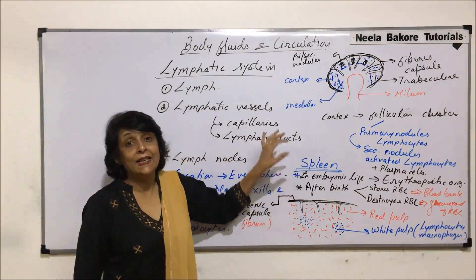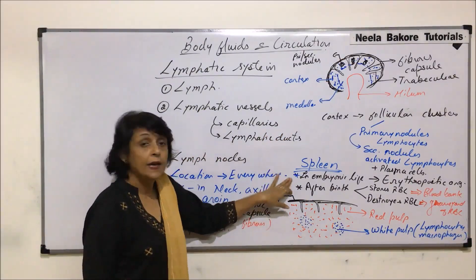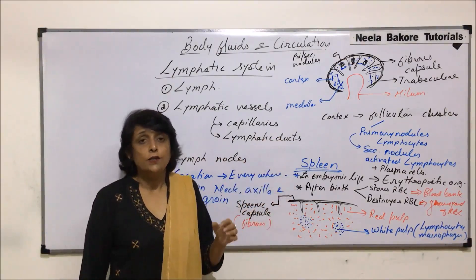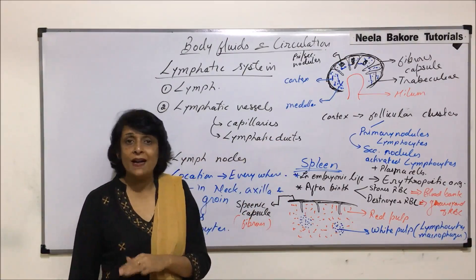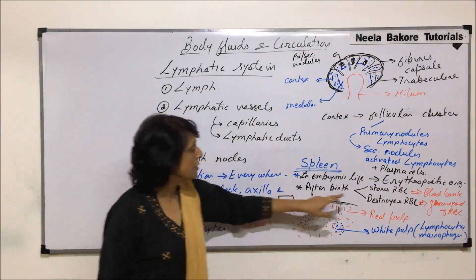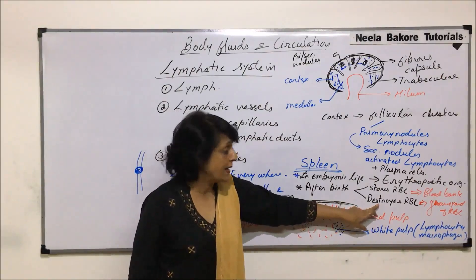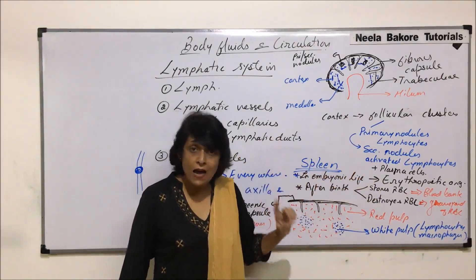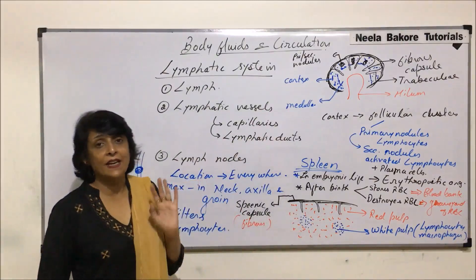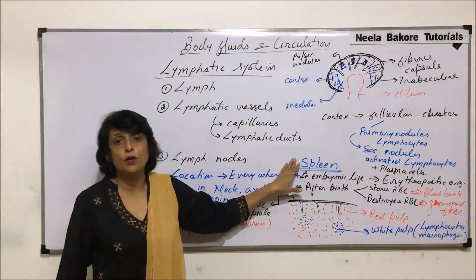The spleen is located above the stomach. In embryonic stage it acts as an erythropoietic organ. After birth, the function of erythropoiesis is taken over by the bone marrow. After birth it performs two functions: it stores RBCs — that is why it is known as the blood bank — and it destroys RBCs after they have completed their lifespan, which is why it is also known as the graveyard.